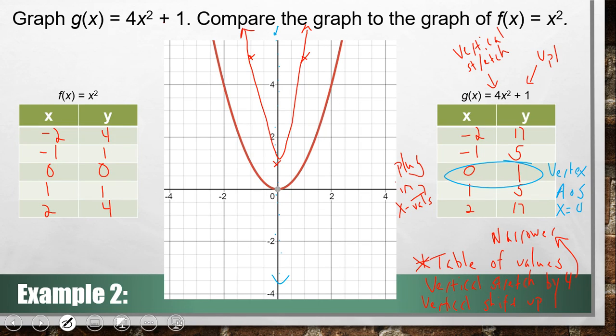The vertex has changed. It did shift up 1. It's narrower, which means it's a vertical stretch by 4, and it's a vertical shift up 1. So when you're asked to compare the graphs, that's what we're looking for: comparison to the parent function. And it's not a bad idea to always put the parent function on there.